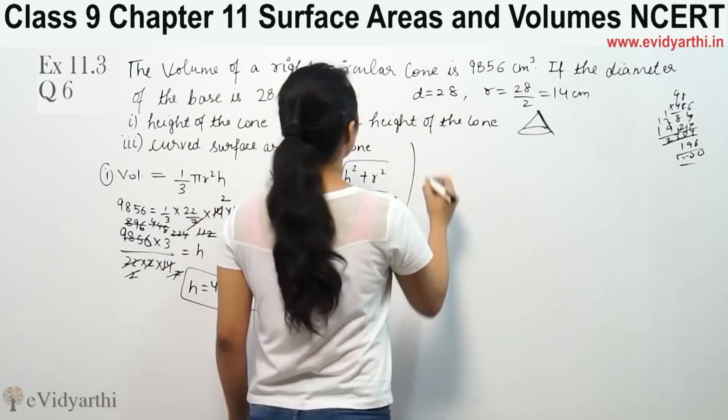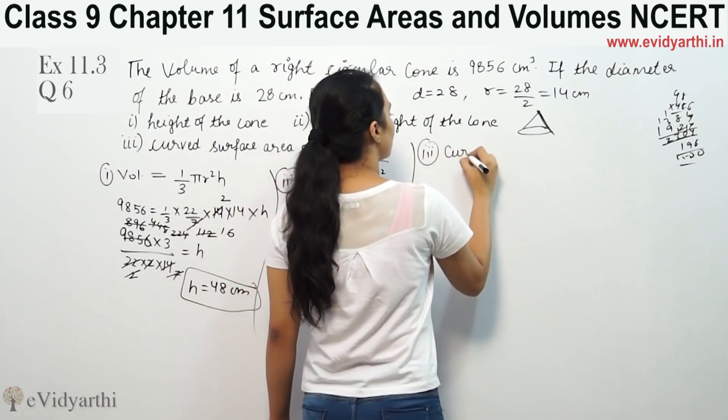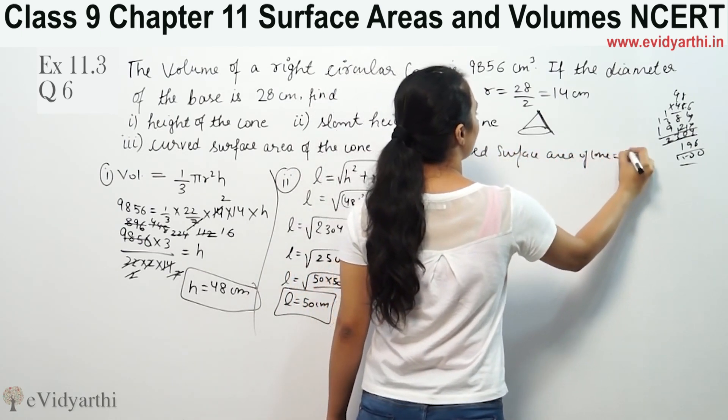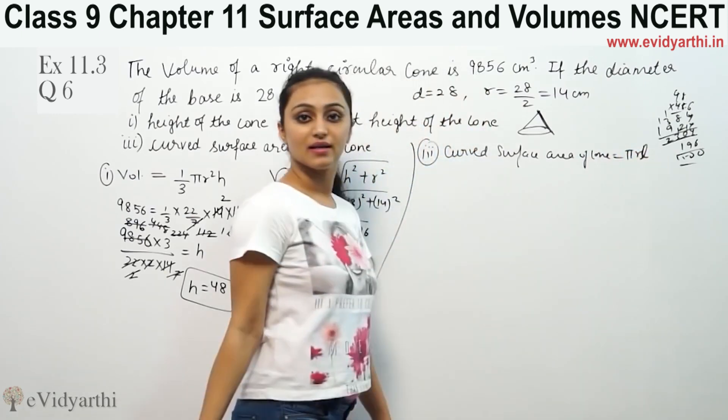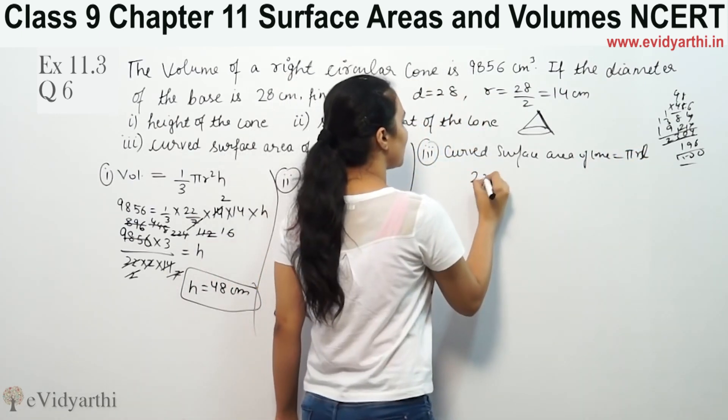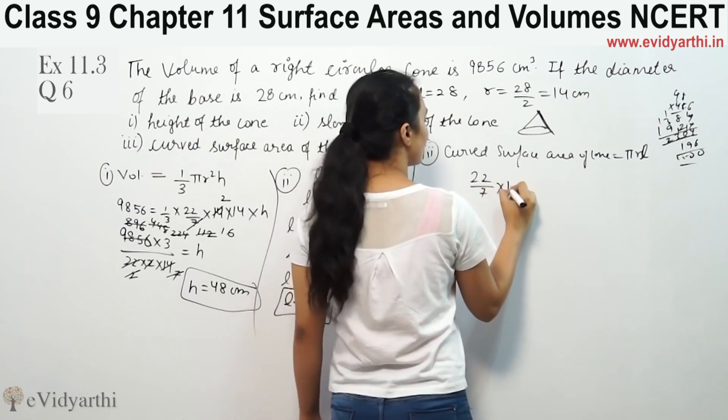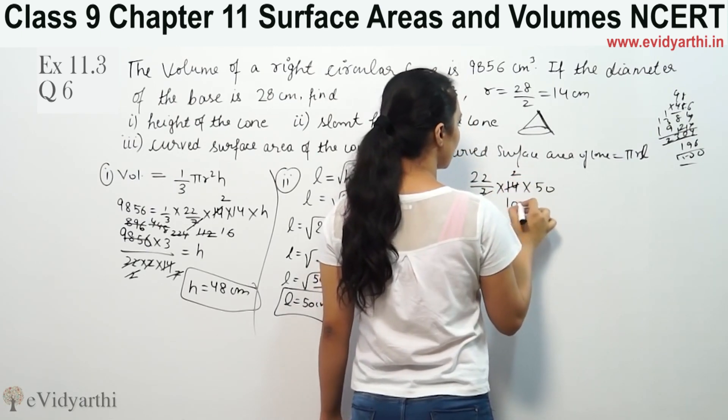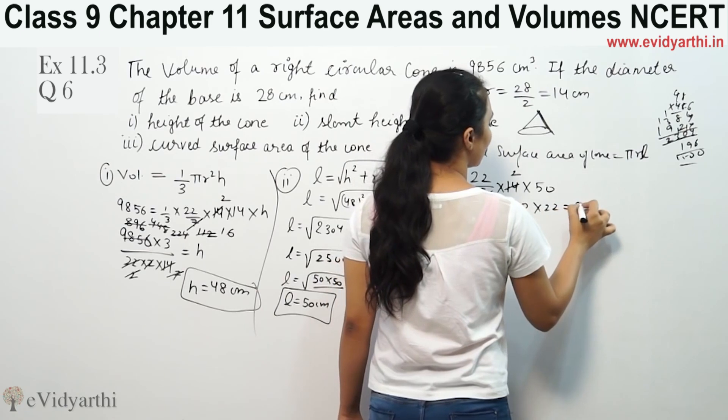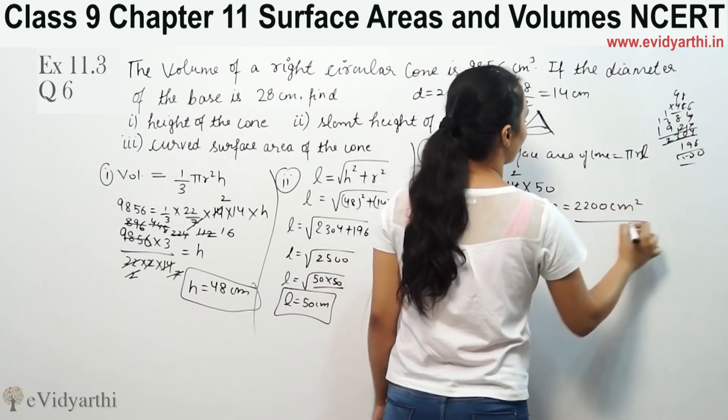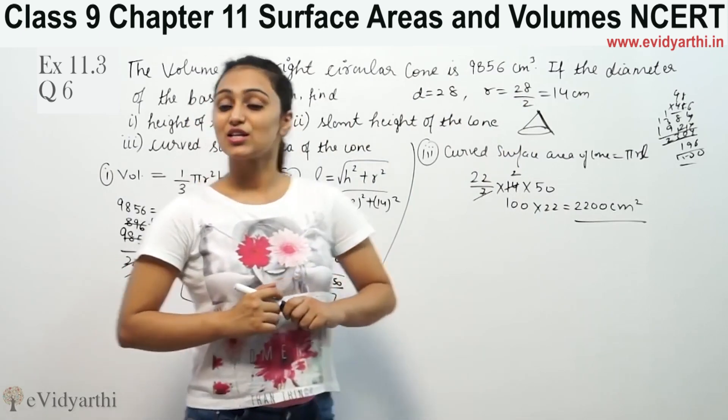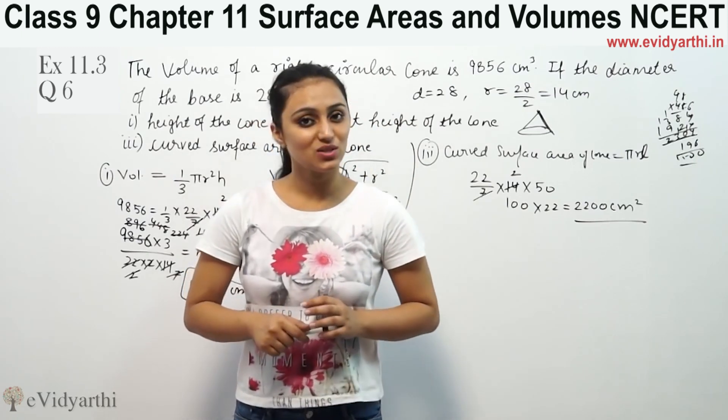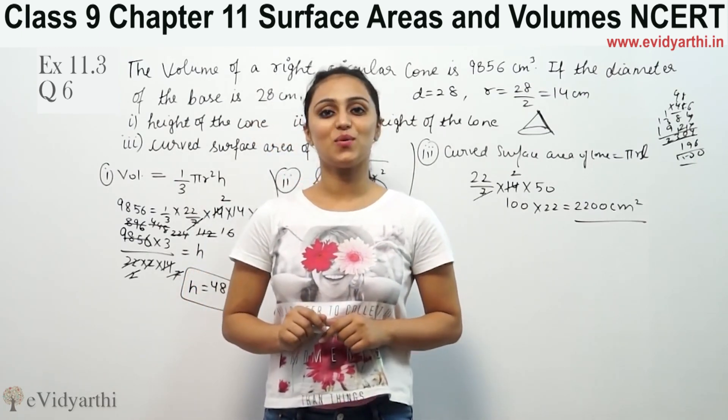Third part, curved surface area. Curved surface area of cone is equal to πrl. So π is 22/7, radius is 14, and slant height is 50. 7 twos are 100 times 22, that means 2200 cm². So this is the curved surface area. This was question number 6 from exercise 13.7. In case you have any doubts, please do like and watch the next video for more questions. Goodbye.